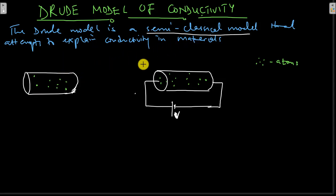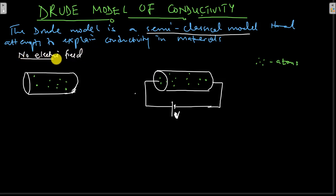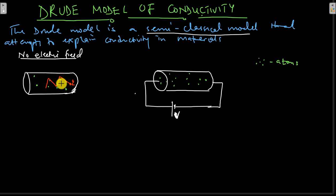To explain the Drude model I have two diagrams here — these are conductors. According to the Drude model, in the absence of an electric field, the charge carriers — which in this case could be electrons, or any charge carriers — would be moving freely around the material, just like gas molecules in a container, unbound and moving throughout.